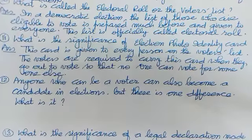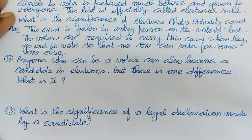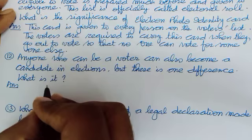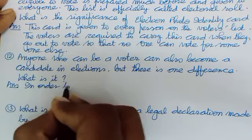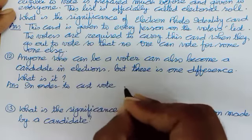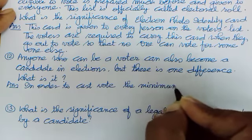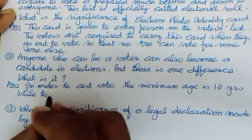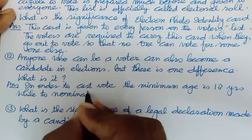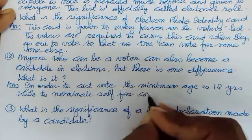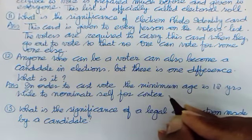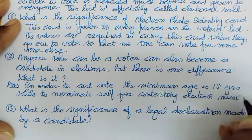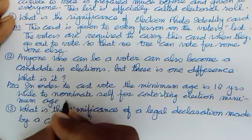EPIC — voter ID card — is carried so that no one can vote for someone else. Next: anyone who can be a voter can also be a candidate — jo vote daal sakta hai, woh chunao lad bhi sakta hai. But there is a difference: in order to cast a vote, the minimum age limit is 18 years, while to nominate oneself for contesting an election, the minimum age is 25 years.